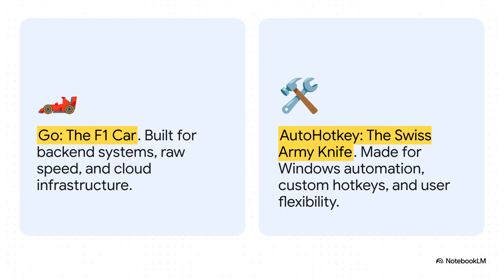On one side, you've got Go — that's our F1 car. It is built for one thing: raw, blistering speed and power. It's perfect for the heavy-duty stuff like back-end systems and the cloud infrastructure that pretty much runs the modern internet.